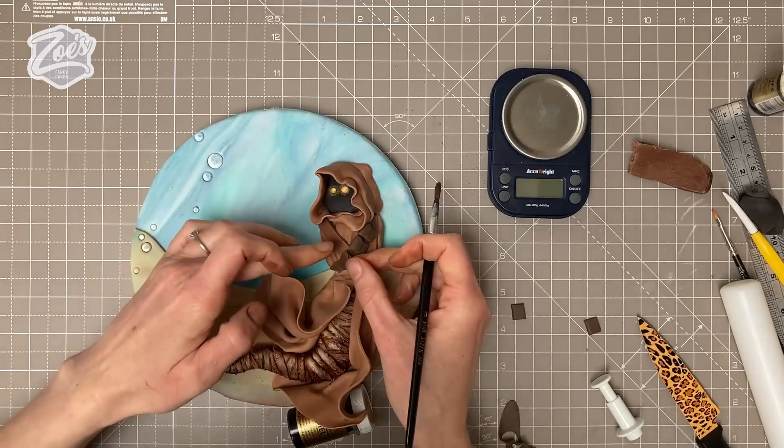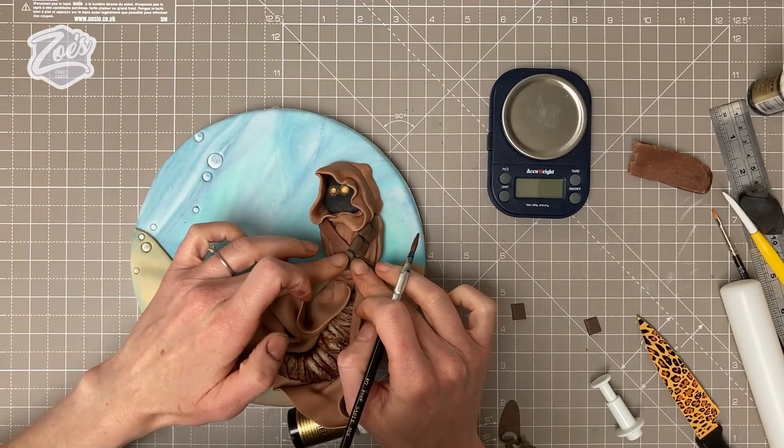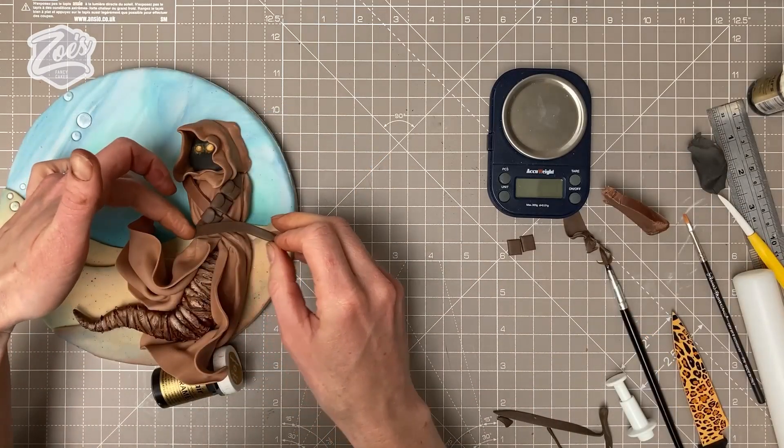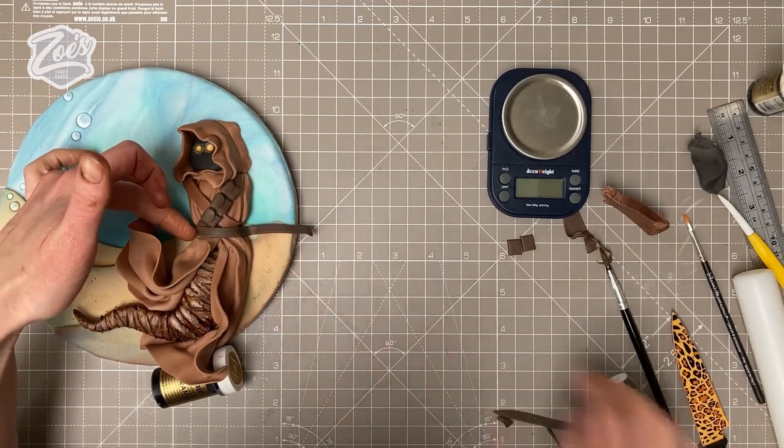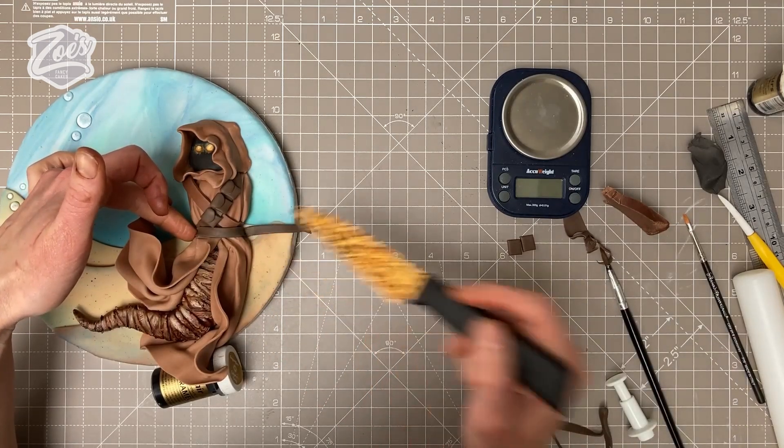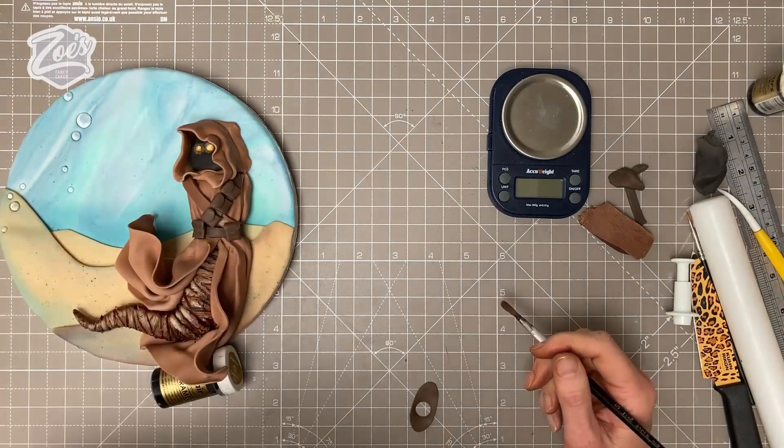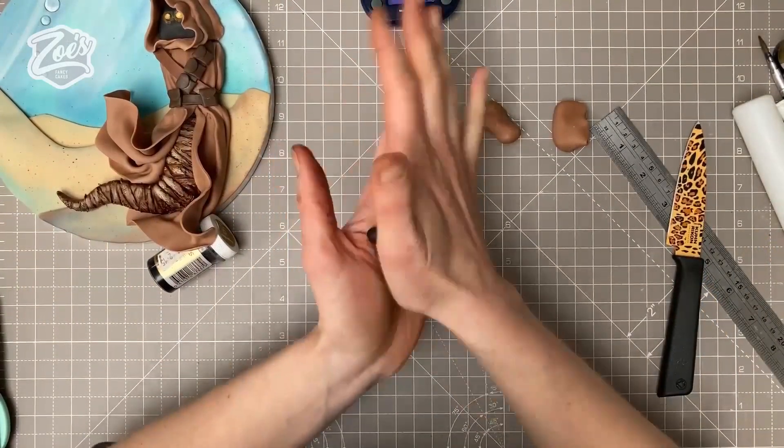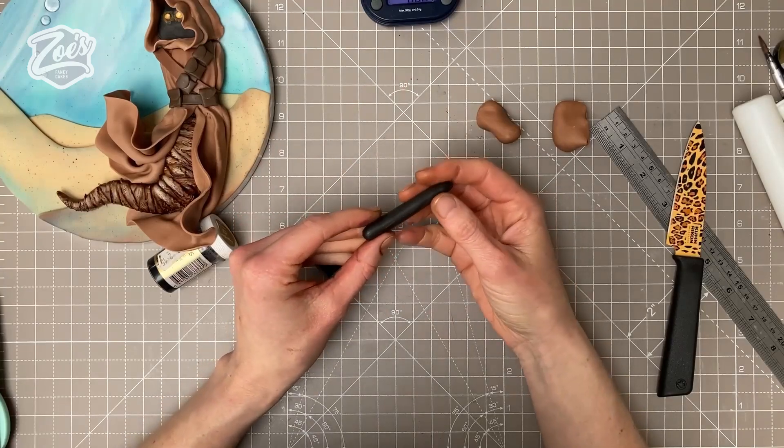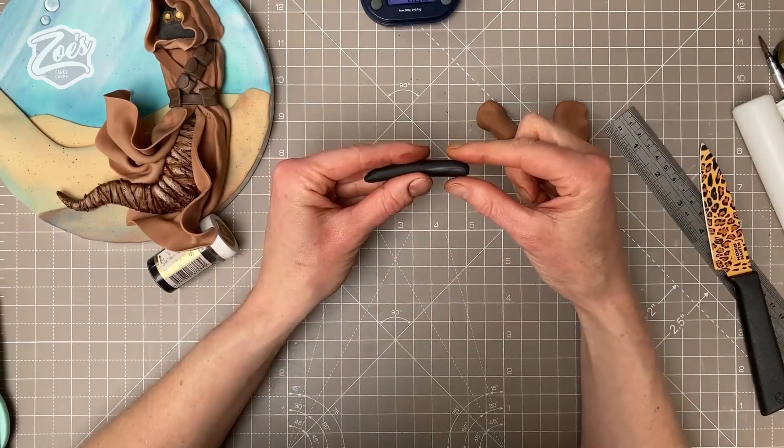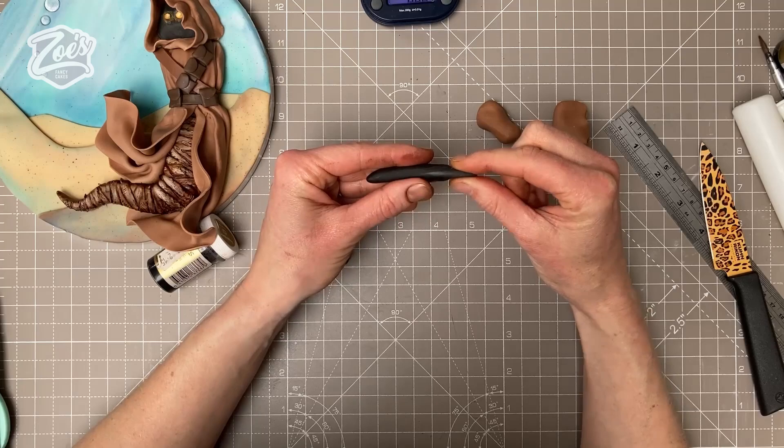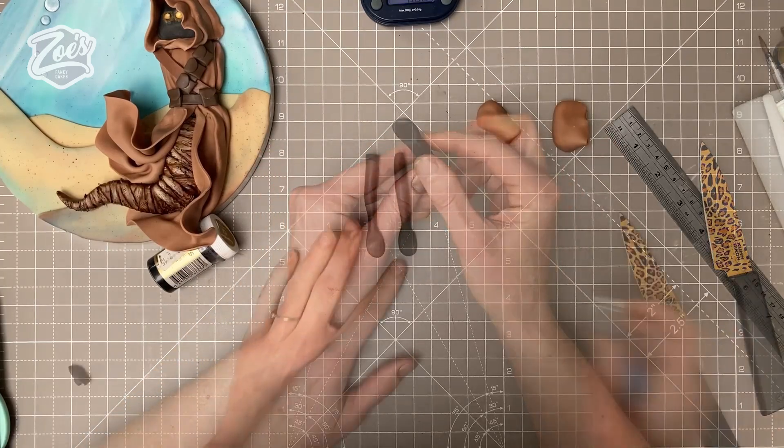These are going to go across that little strap we put on earlier. Let's give him a belt. I say him—I don't know. I presume there's female Jawas as well, so I don't know if this one's a boy or a girl. We're going to make a little hand, so we've rolled that piece of black this time, flattening the end for the hand.